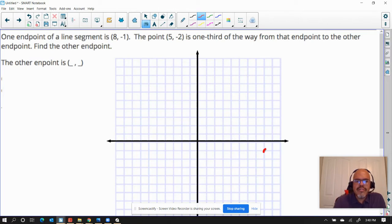So I'm just going to go ahead and put these points right here. So 8, negative 1. And then it has another point. The point 5, negative 2 is one-third of the way from that endpoint to the other endpoint. Find the other endpoint.